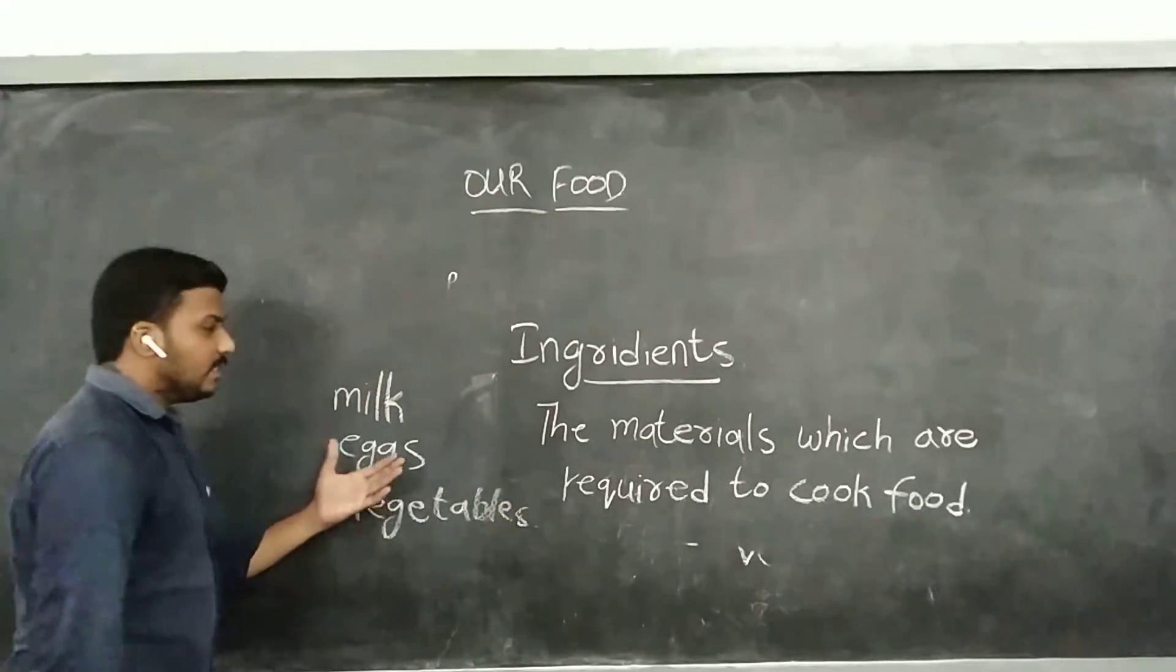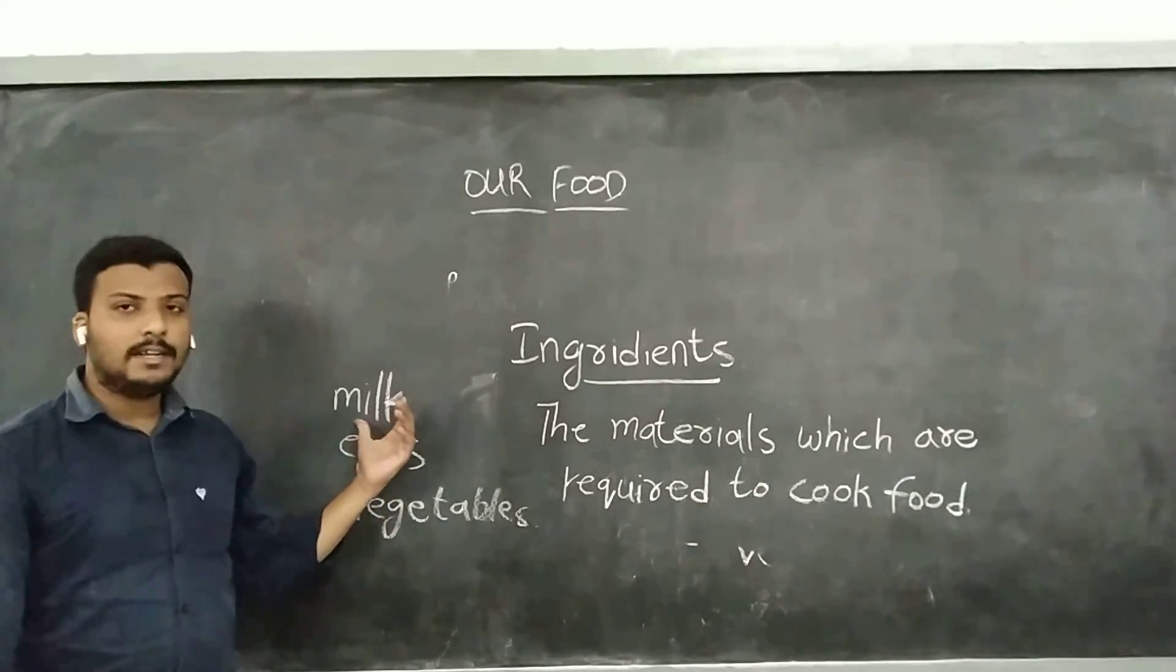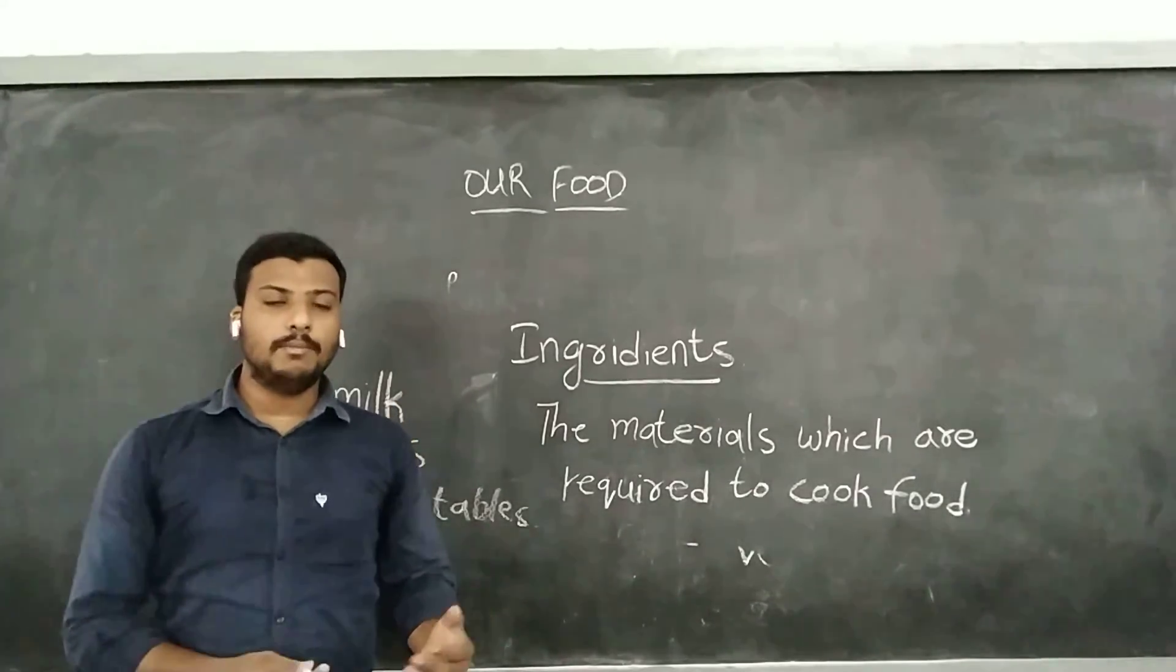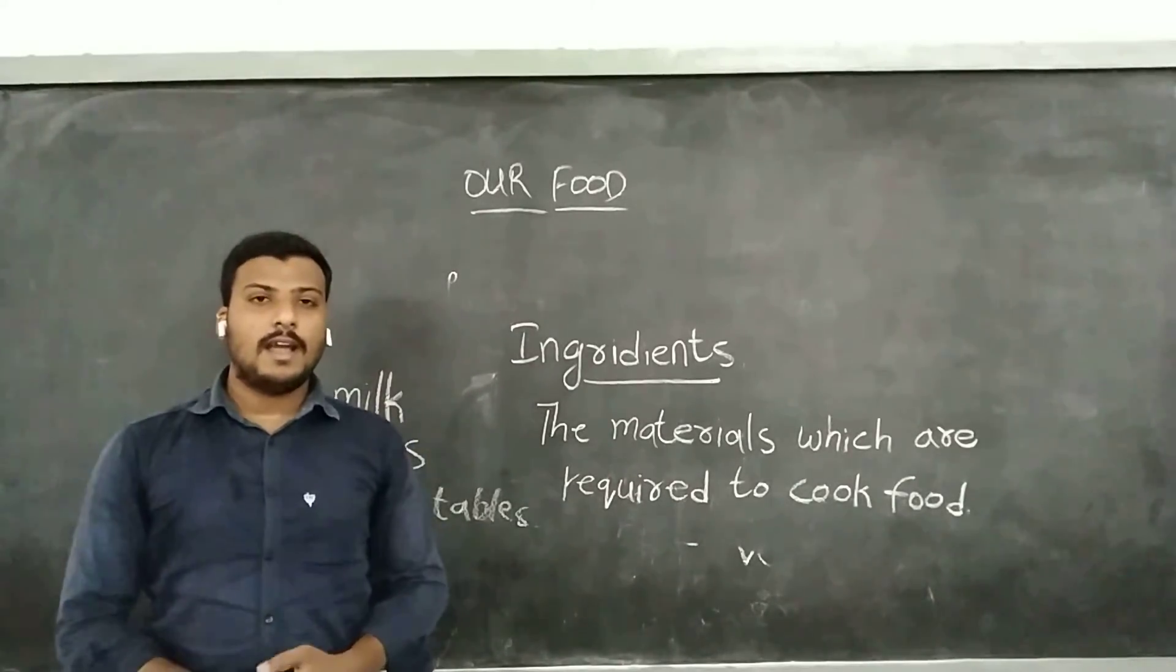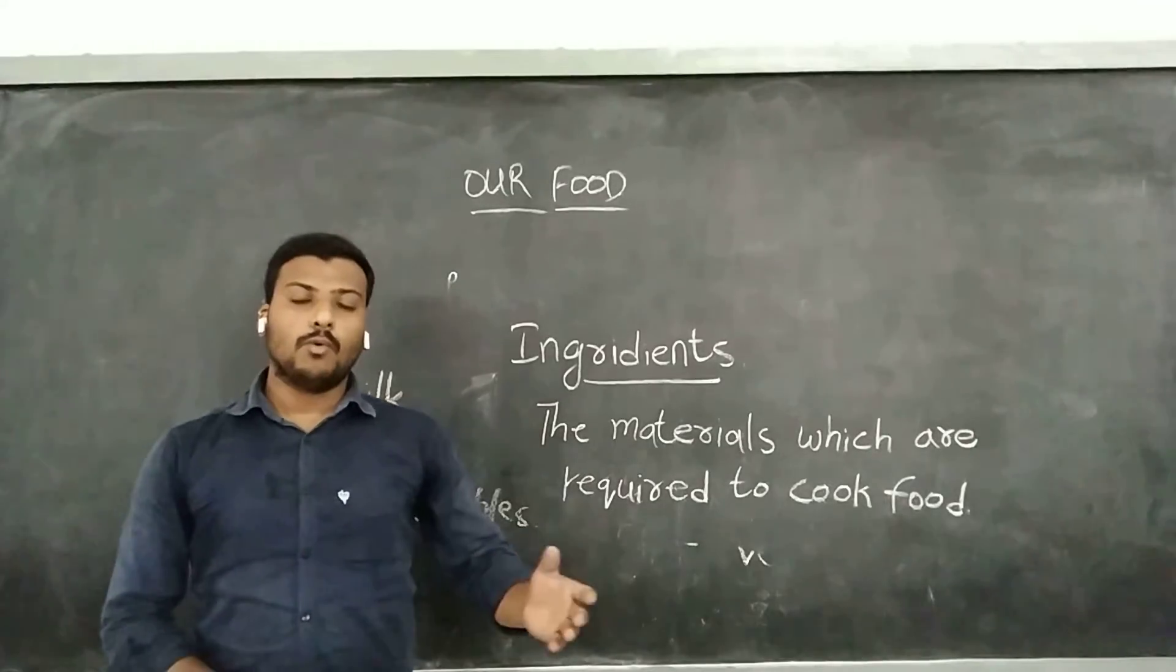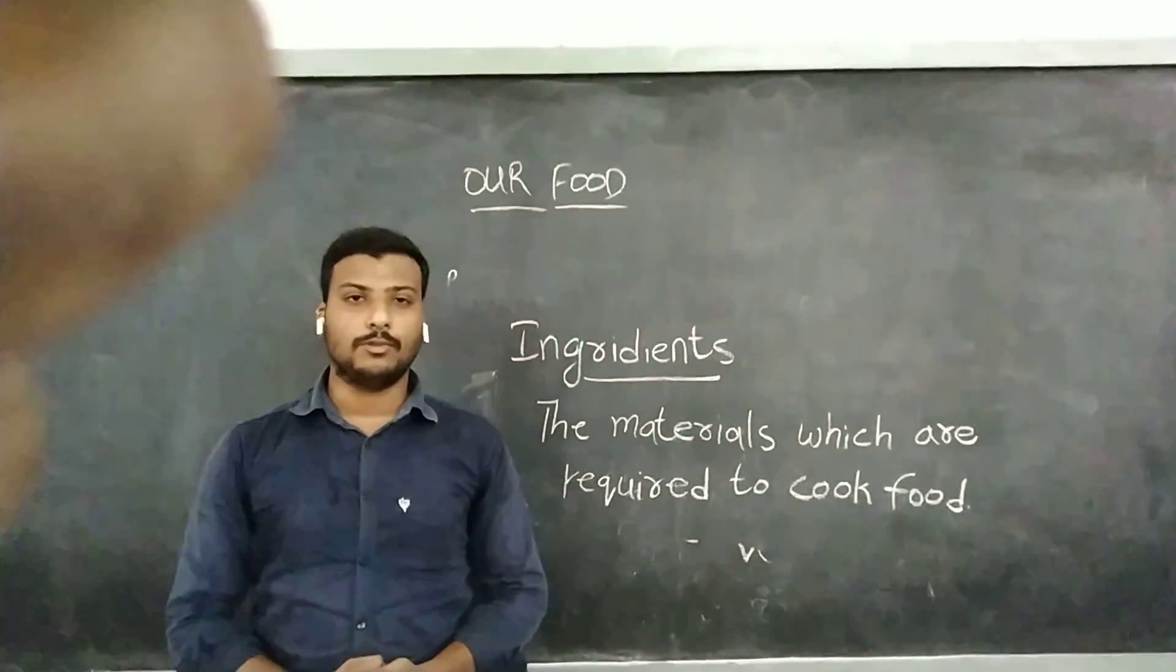Where do these ingredients come from? We will get vegetables and fruits from plants, and milk, meat and eggs from animals, and other sources like salt. You know salt is a mineral that comes from the ocean. We will see what is the next topic in the next class. Thank you.